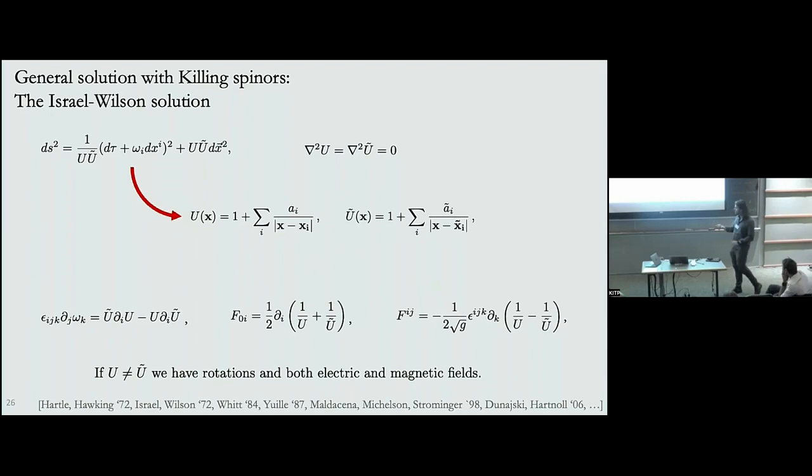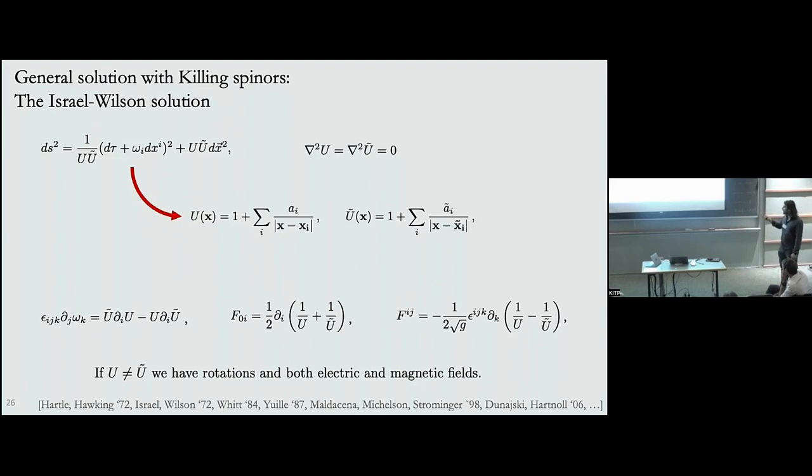Importantly, if U is different from Ũ, the equations of motion tell us we have rotational solutions — the equation of motion for ω, the rotation, is linked to this difference. It also tells us that even if we start with a solution that only has electric charges, if U and Ũ are different, that automatically induces a magnetic field as well. This makes a lot of sense: electric charges in a rotating solution induce a magnetic field.